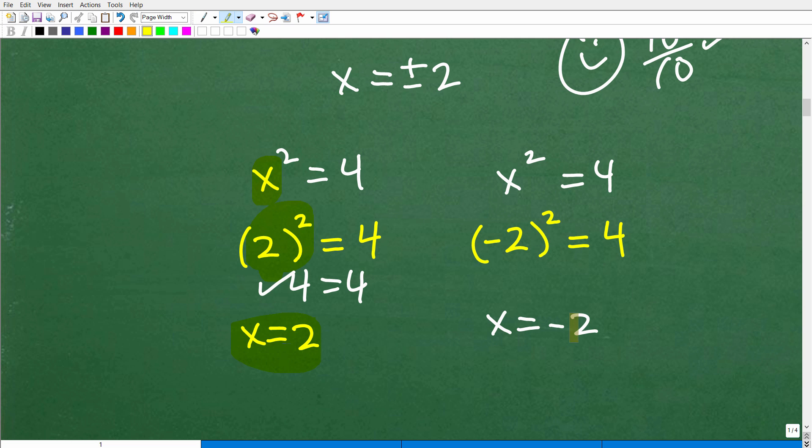So now let's go ahead and check negative two here into this same equation, x squared is equal to four. So I'm going to replace this x with negative two. So negative two squared is what? Well, negative two times negative two is positive four. So negative two squared is in fact positive four. Positive four is equal to positive four. So that checks as well.